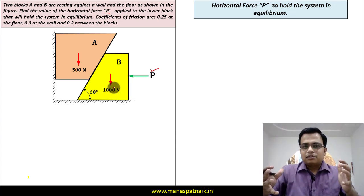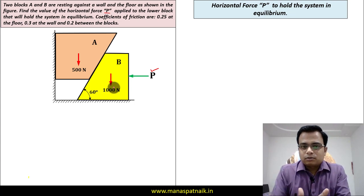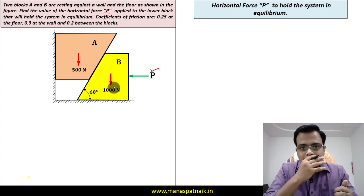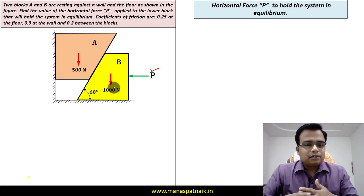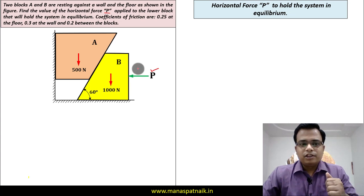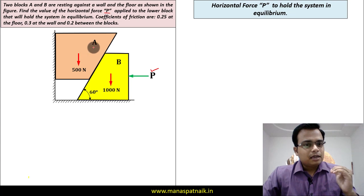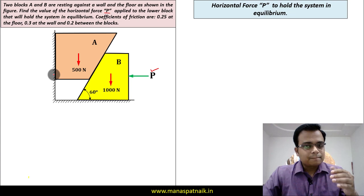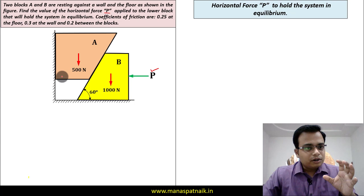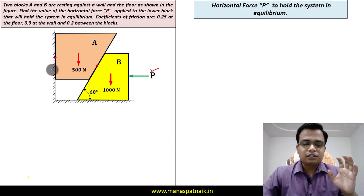Find the value of horizontal force P applied to the lower block that will hold the system in equilibrium. This question could have been framed differently — if we had to find the minimum force P to just start block A moving upward, friction would have been in the downward direction. But right now, A's natural tendency is downward, so friction forces at the two contact points will be in the upward direction.